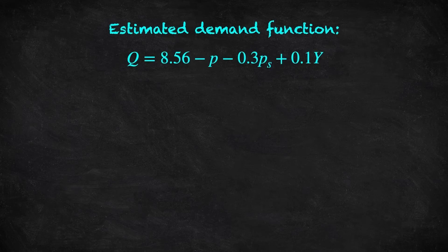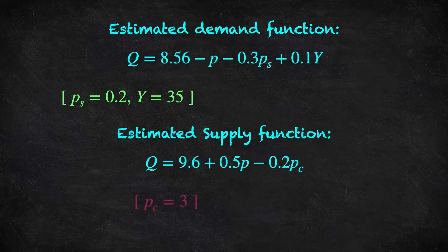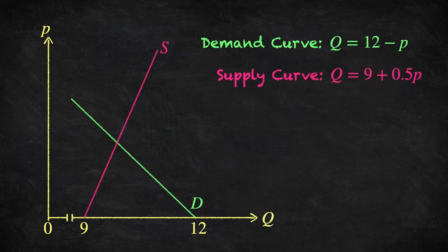In the last two videos we've developed the idea of demand and supply by looking at the market for coffee. The estimated linear demand function was this, and the estimated linear supply function was this. To represent these graphically, we fixed the value of some of these variables: taking the price of sugar to be 20 cents, the consumer's income to be 35, and the price of cocoa to be $3. This gave expressions for the demand curve and the supply curve, and allowed us to produce this diagram, where price goes on the vertical axis and quantity goes on the horizontal.